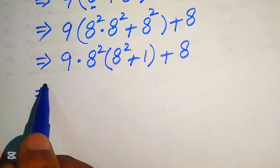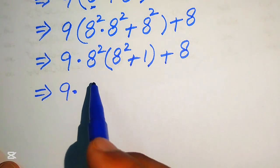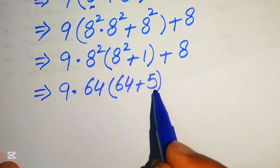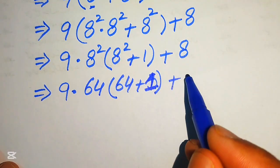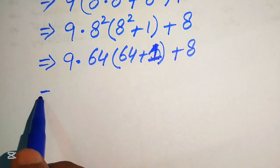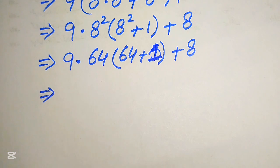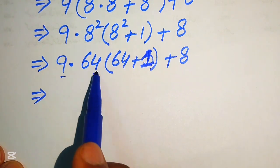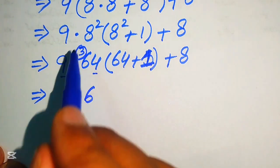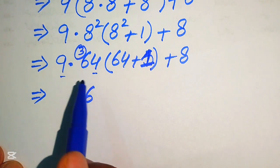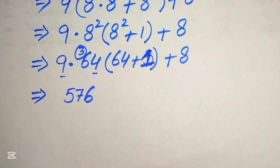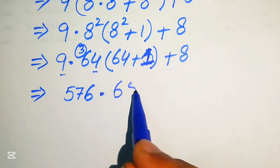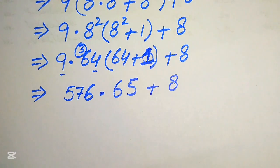We rewrite this as 9, and here 8 squared equals 64. So inside the bracket we have 64 plus 1. In the next step we multiply 9 by 64 in our mind: 9 fours are 36, write 6 carry 3; 9 sixes are 54, plus 3 becomes 57 — so we get 576. Then 64 plus 1 becomes 65, and at the end we still add 8.